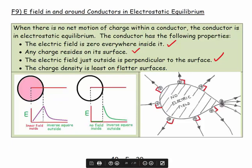The charge density is the least on flatter surfaces. These are abstract lines, but you get more of them when there is a tip. And that's the principle behind the electron emitter. You have a very sharp needle of a conductor, and because there's a lot of field lines right at the tip, it's easier for the electrons to escape. If you look inside a photocopier, there'll be a line of needles pointing where you can spray the electrons where you want them.